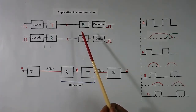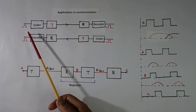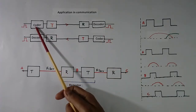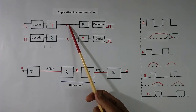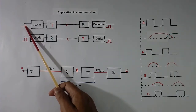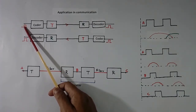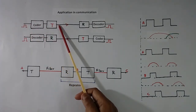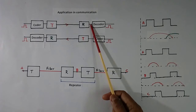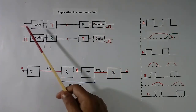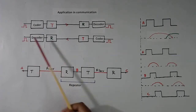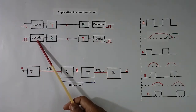Now the method of application in communication. Suppose we have to transmit a signal from one point to another. We have an encoder, then a transmitter, then the fiber optic cable, then a receiver, and finally a decoder. The electrical signal is encoded, transmitted as optical light, received, converted back to electrical, and decoded. In many communication setups there will be a two-way chain — one in each direction, with a coder at one end and a decoder at the other.